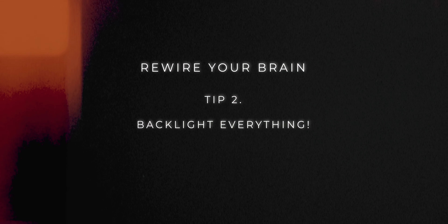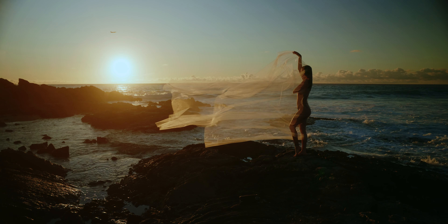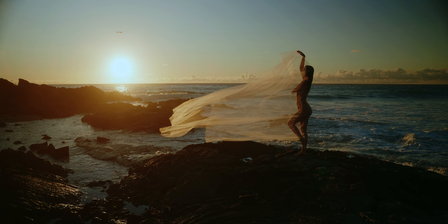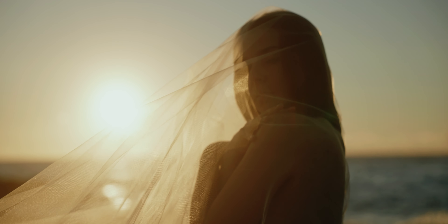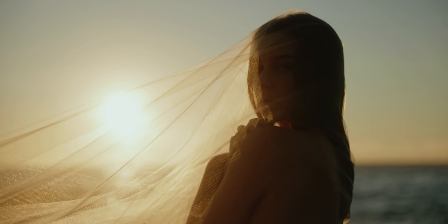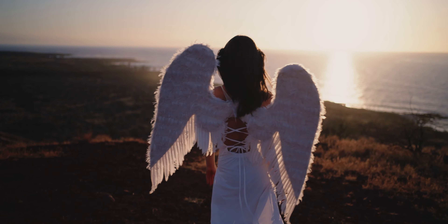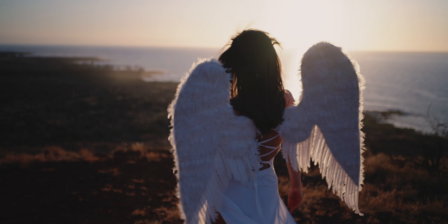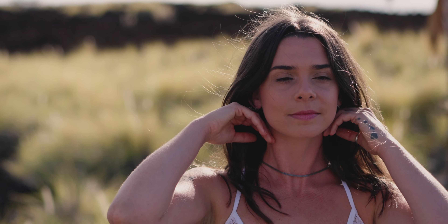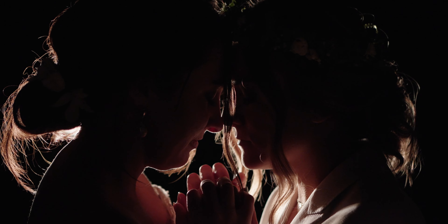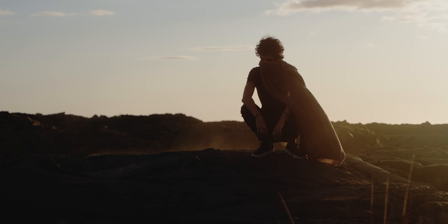Number two, backlight everything. Backlighting is your cinematography secret weapon, capable of turning any ordinary scene into a visual spectacle. By positioning your light source behind your subject, you create a stunning halo effect that adds depth, drama, and atmosphere to your shots. One of the most significant advantages of backlighting is the way it separates your subject from the background, emphasizing their silhouette and adding a sense of dimensionality to your image. Also, it just looks super dope.